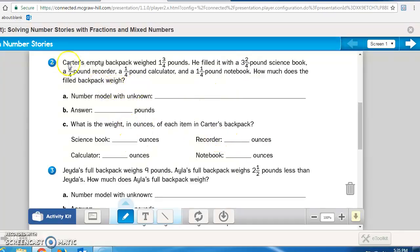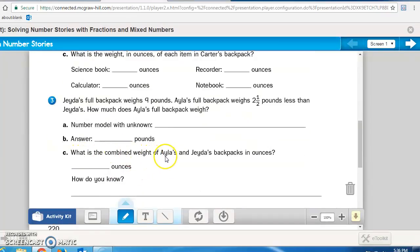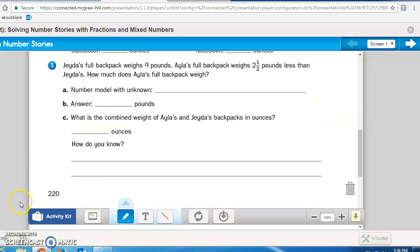For the recorder, half a pound, again, 2/4 is how much? 1/4 pound, a calculator. Well, that's half of the pound cut in half again. And now the notebook. Do your number model with the unknown, answer in pounds, and then it says, what is the combined weight of Ayla's and Jada's backpacks in ounces? You need to add them together. How do you know? Show your work. Pause the recording now, finish Math Journal page 220, then bring it up to me to check so that I can check one page at a time.